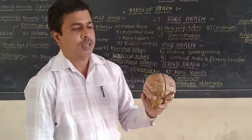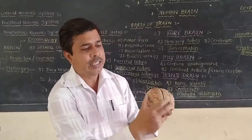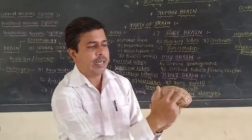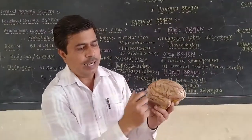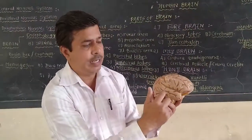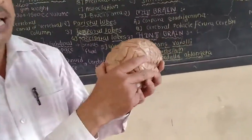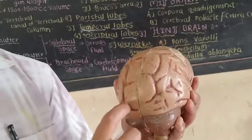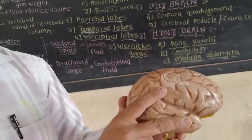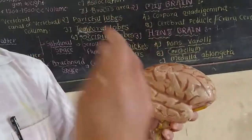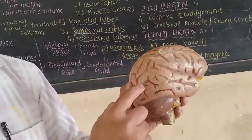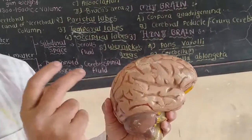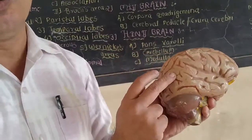The four lobes are: on the frontal side, the frontal lobe; on the lateral side, the parietal lobe; below the parietal lobe, the temporal lobe; and at the back side of the cerebrum, the occipital lobe. At the central region where the parietal lobe, temporal lobe, and occipital lobe connect with each other, there is a fifth lobe known as the insula.